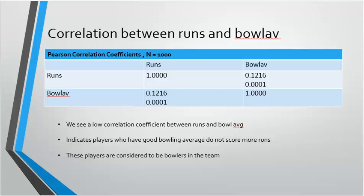Next we see the correlation curve between runs and bowling average. We see that we have a very low correlation coefficient between runs and bowling average. This indicates that these players are bowlers — the players who take wickets don't score runs and are considered as bowlers in the team.